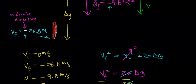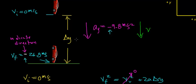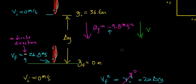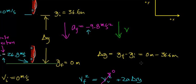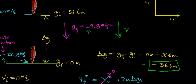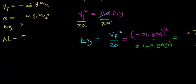Another way to think of this: the car has to fall through a distance of 36.6 meters to attain a final velocity of 26.8 meters per second. So if the distance fallen is negative 36.6 meters, then our initial height is 36.6 meters and our final height is 0 meters — that's ground level. The change in y equals final y minus initial y, which is 0 meters minus 36.6 meters, equaling negative 36.6 meters. That's the reason for the negative value — the car is falling in the downward, negative y direction.